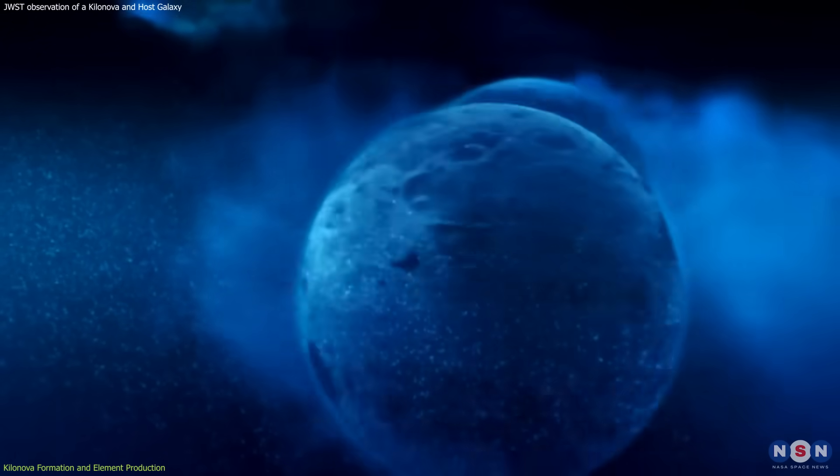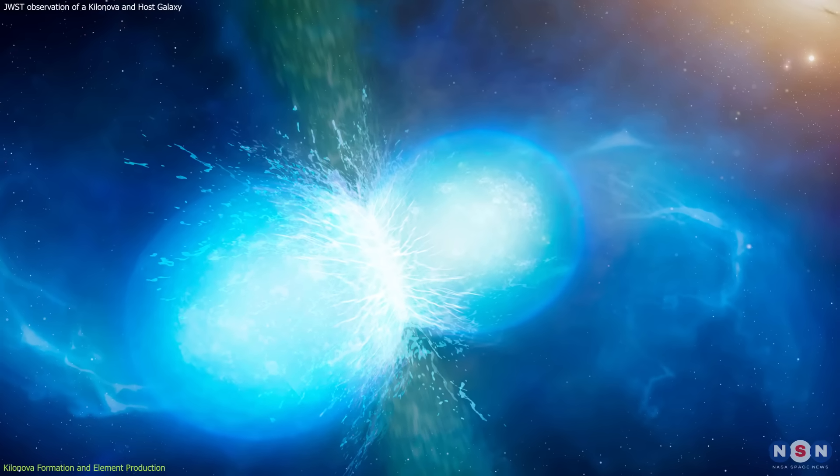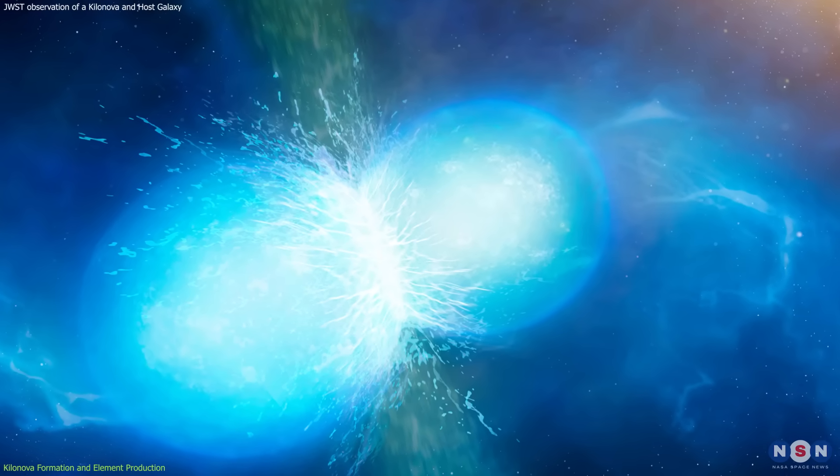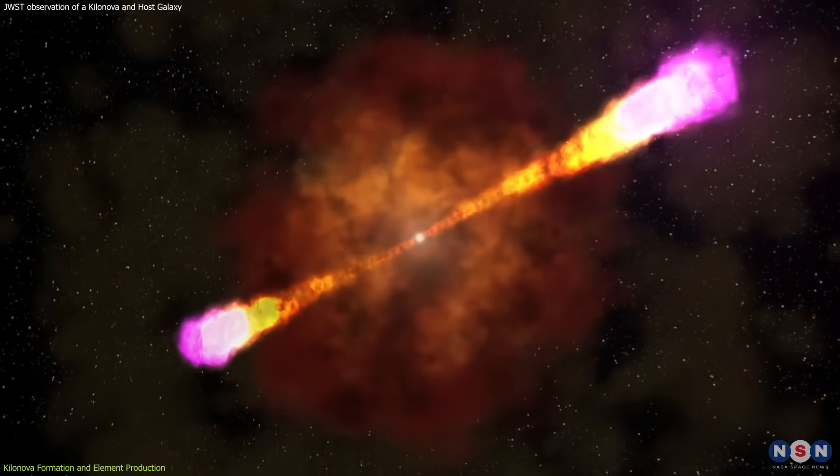Sometimes, these cores can orbit each other in a binary system, gradually losing energy due to gravitational waves until they collide. When two neutron stars collide, they create a spectacular show of fireworks. First, they emit a short burst of gamma rays that can be seen across the universe.